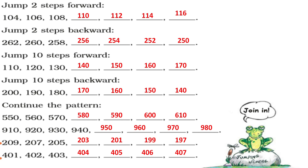Continue the pattern — counting in tens: 550, 560, 570, 580, 590, 600, 610. Another pattern: 910, 920, 930, 940, 950, 960, 970, 980. Backward pattern in twos: 209, 207, 205, 203, 201, 199, 197. Forward pattern: 401, 402, 403, 404, 405, 406, 407.